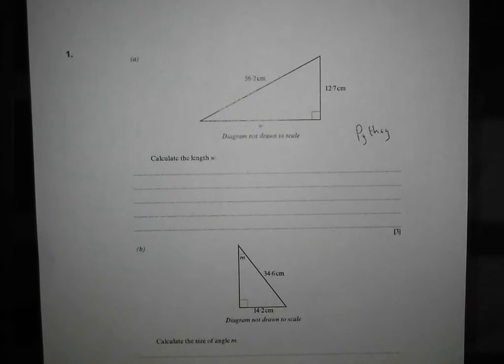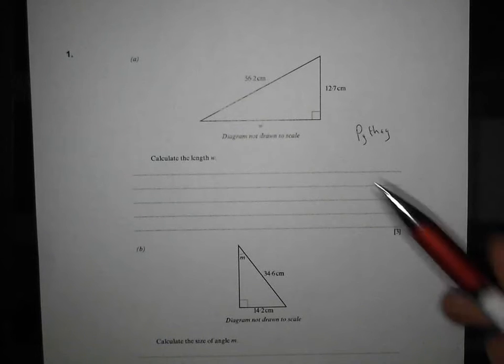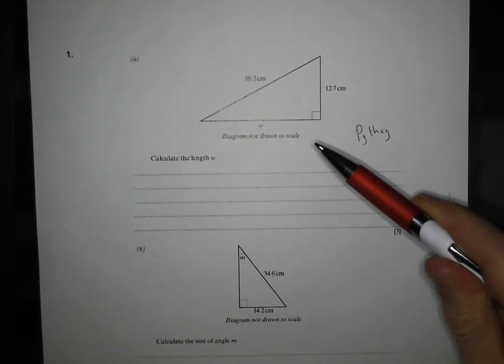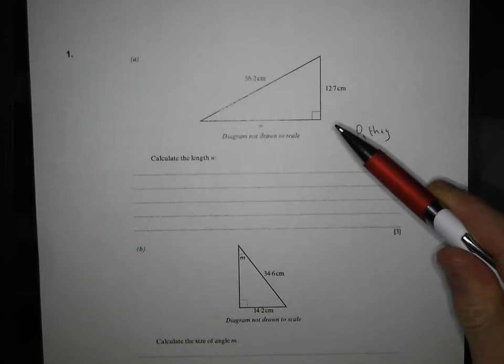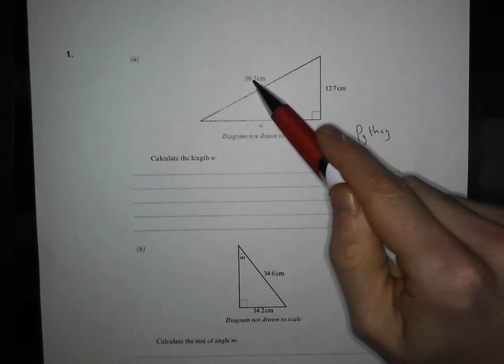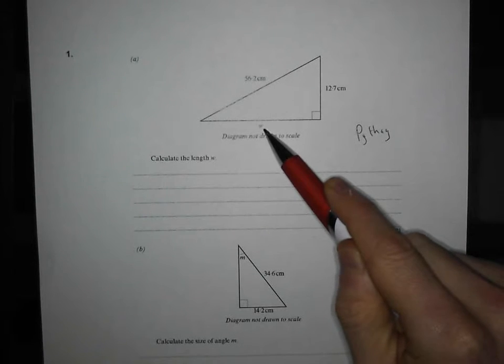Now, once you've decided it's Pythagoras, your next decision you need to make is whether you're going to add the squares of the two sides together or subtract the squares of the two sides together. And the way I always remember this is, if I'm trying to find the hypotenuse, I need to add. If I'm trying to find a shorter side, I need to subtract. So this one is a subtraction question.